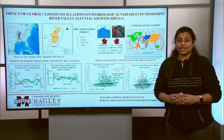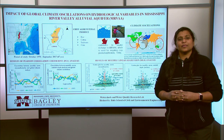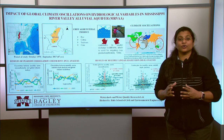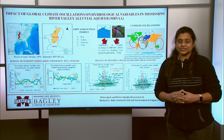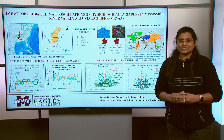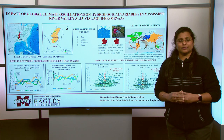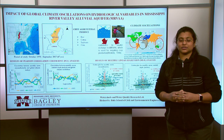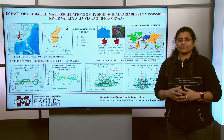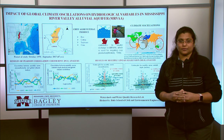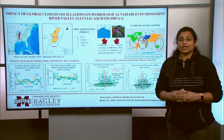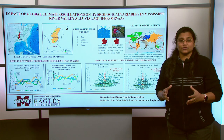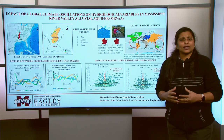This Alluvial Aquifer has both national and international importance with respect to agricultural crop production. The chief agriculture produce of this region include rice, cotton, corn, and soybeans. The hypothesis of my research is that despite other climate variables like increase in temperature and anthropogenic sources like unsustainable groundwater pumping, the rainfall pattern impacted by global climate oscillations is a major driving factor for streamflow alteration within this region. Literature suggests that both rainfall and streamflow are the predominant sources for aquifer recharge. But what are climate oscillations?